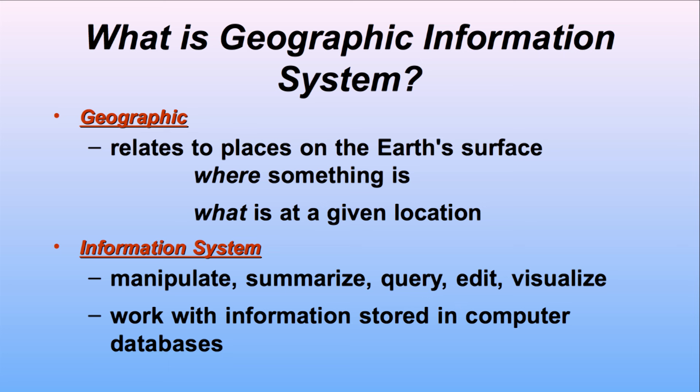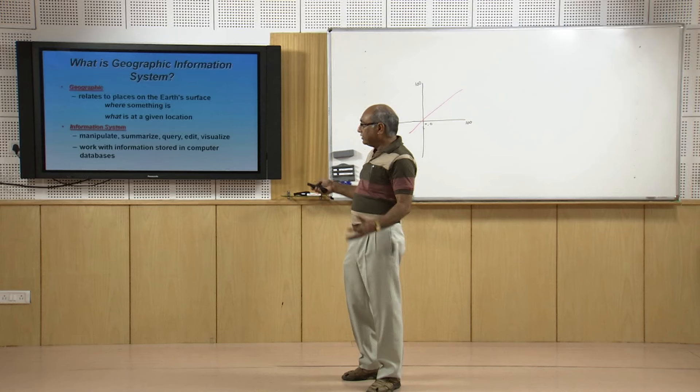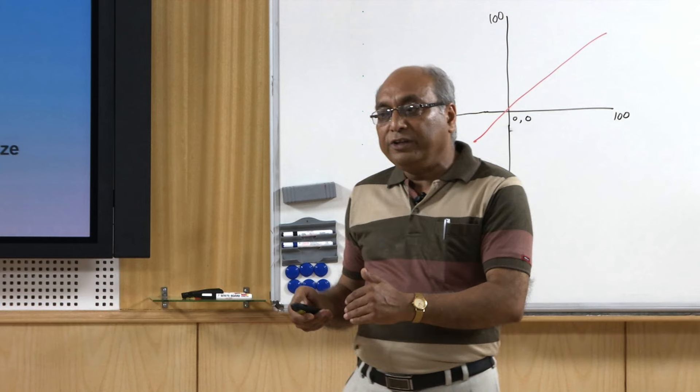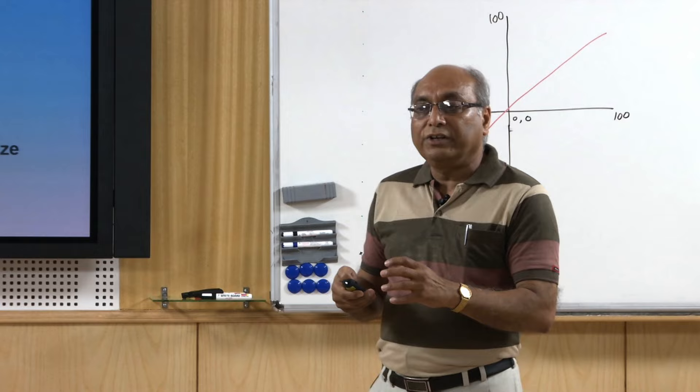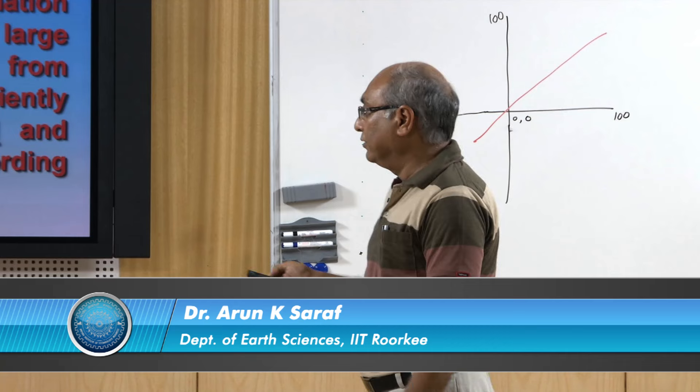That is why the geographic component is very important. The other two terms — information and systems — are ones most of us are familiar with. Data is converted into information through computers, and the GIS platform allows us to manipulate, summarize, raise queries, add data, and visualize. Visualization is very important, as shown in the earlier watershed slide. GIS is an integrated system having not only geographic data but also a full database system, so all the qualities of DBMS systems are there and all CAD system capabilities are also there.